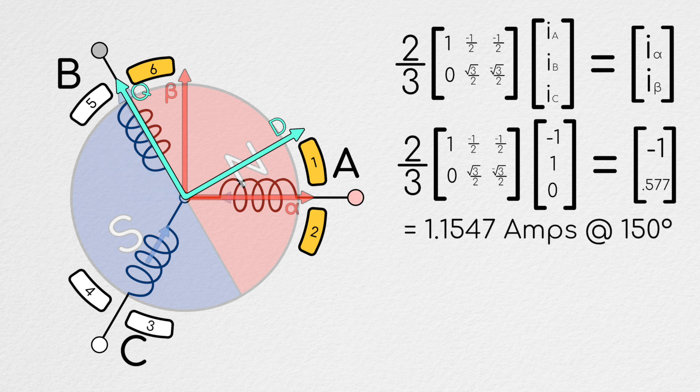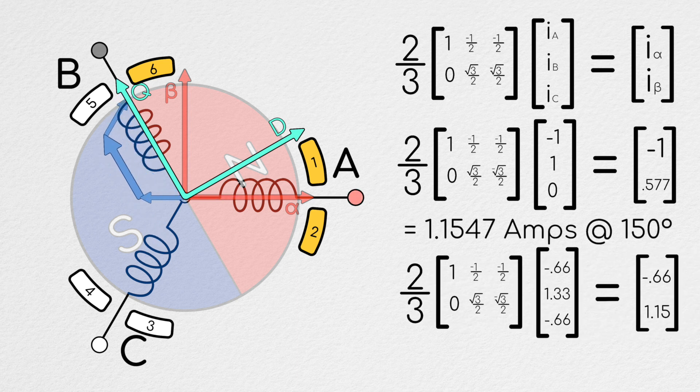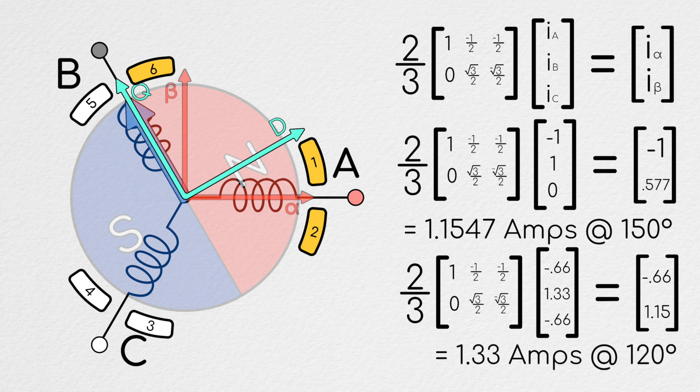However, when we're using all three phases, the phases in parallel end up canceling out more. The result of this is that while we're running 33% more current through the system, because a larger portion of the vector is canceling along the D axis, we only end up with about 15% more net magnetic flux.